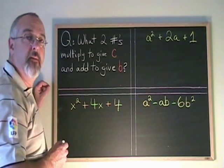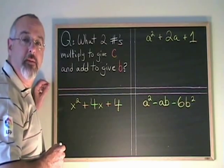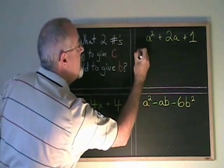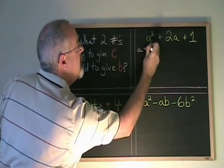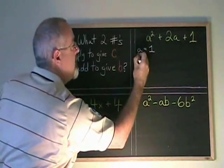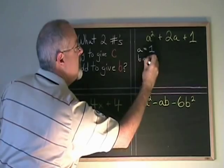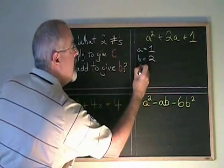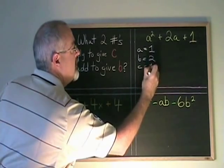If the trinomial is in the form ax² + bx + c, the a is the numerical coefficient of the first term. The b is the numerical coefficient of the second term. In this case, that is a 2. And the c is the numerical coefficient of the third term. In this case, that is a 1.